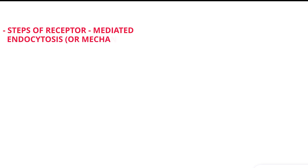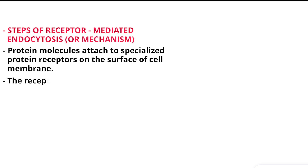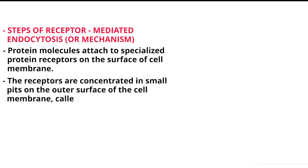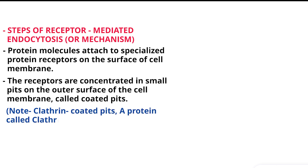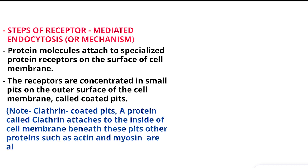Steps of Receptor-Mediated Endocytosis: Protein molecules attach to specialized protein receptors on the surface of the cell membrane. The receptors are concentrated in small pits on the outer surface of the cell membrane, called coated pits. Note: clathrin-coated pits — a protein called clathrin attaches to the inside of the cell membrane. Beneath these pits, other proteins such as actin and myosin are also present.